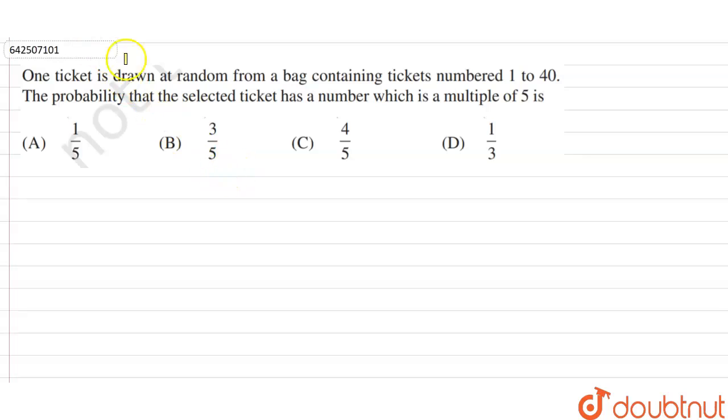Hi students, our question is: one ticket is drawn at random from a bag containing tickets numbered 1 to 40. The probability that the selected ticket has a number which is a multiple of 5 is.